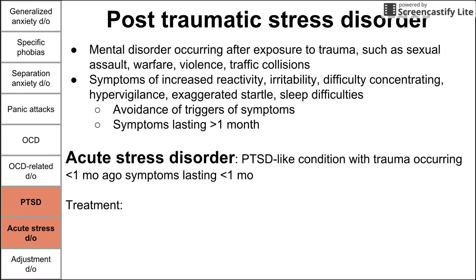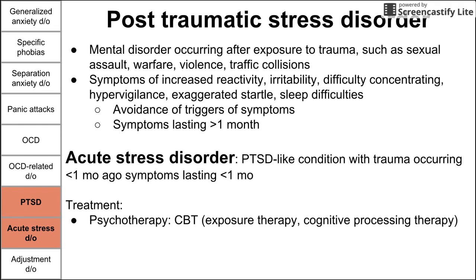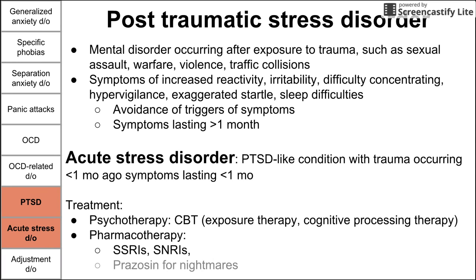Treatment for PTSD is psychotherapy — specifically CBT including exposure therapy and cognitive processing therapy. Pharmacotherapy can also be helpful, specifically SSRIs and SNRIs. You can also use prazosin to treat nightmares specifically; it's an alpha blocker used to treat that particular symptom of PTSD.